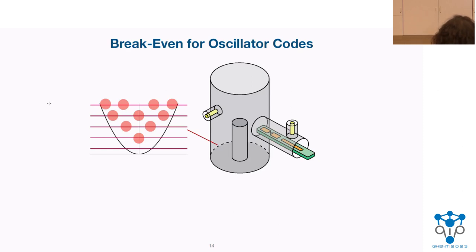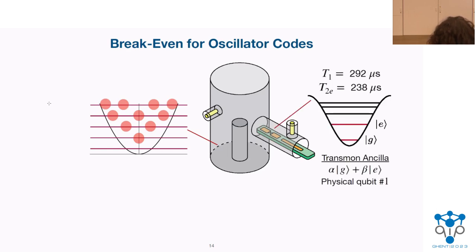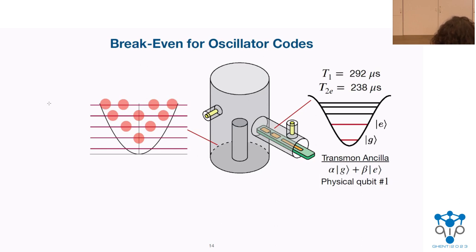The oscillator requires a two-level system to control it and perform universal computing. On the green chip, I have the two-level ancilla — essentially a transmon ancilla with approximately 300 microsecond lifetime. This is what you use as qubits in your systems. It's a multiple-level system but we use the bottom two levels — the G and E levels, which are effectively our zero and one of the ancilla. This is already one physical qubit in my system, so I could compare my oscillator code with this ancilla.